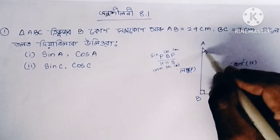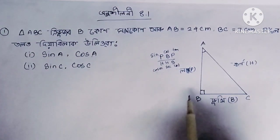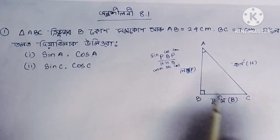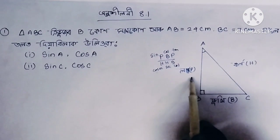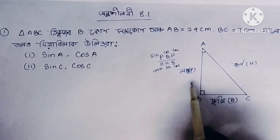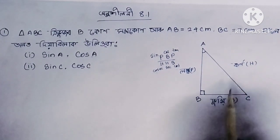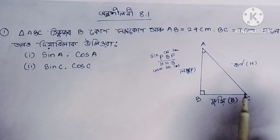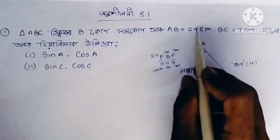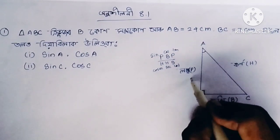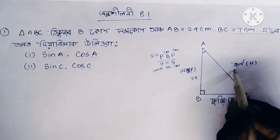If we consider angle A, the perpendicular and base are identified. Using Pythagorean theorem: if AB equals 24 cm and BC equals 7 cm, then by Pythagoras, the hypotenuse can be found from these two sides.